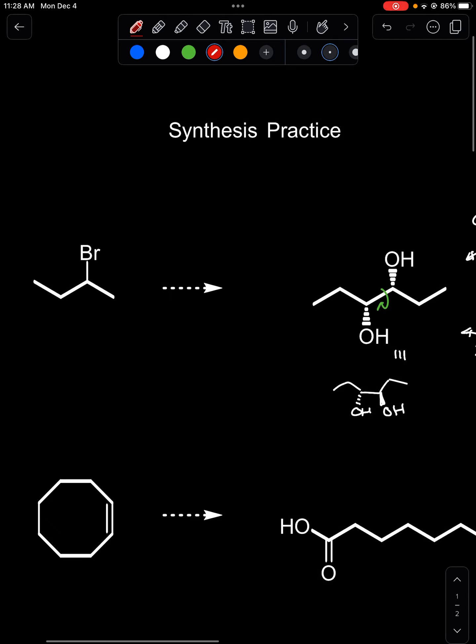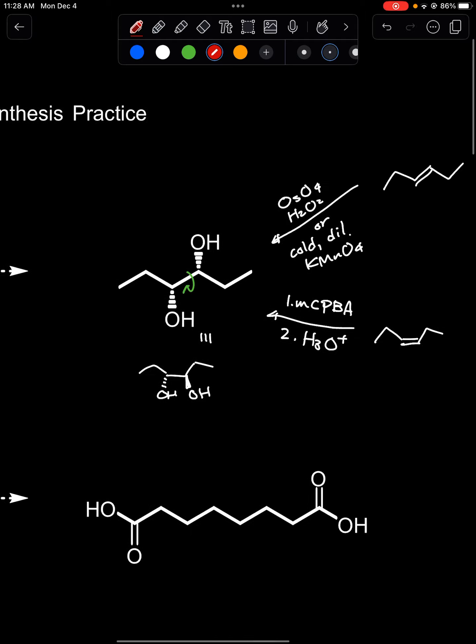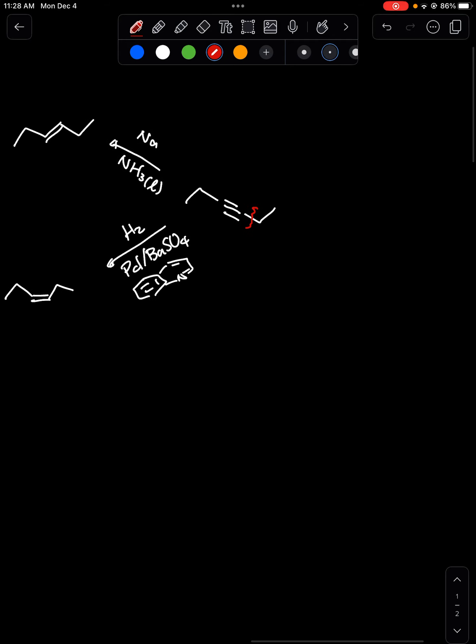If you compare the study material to the products I want you to notice how there's two extra carbons added to the product. So this would be the perfect opportunity to do so from that terminal alkyne first by deprotonating the terminal proton and then add things like that. That would do it.